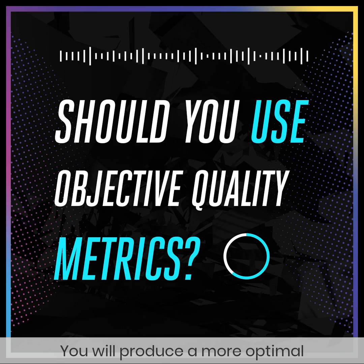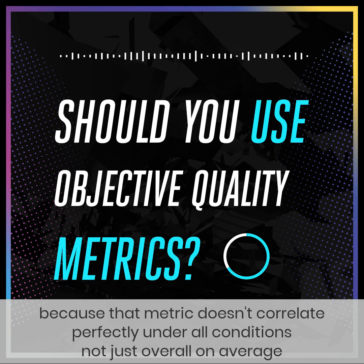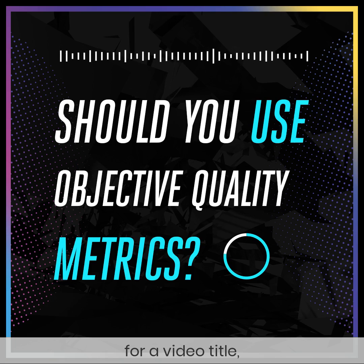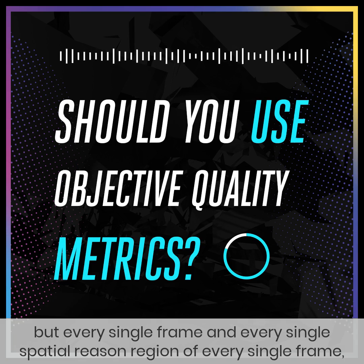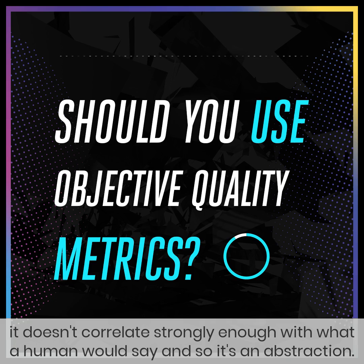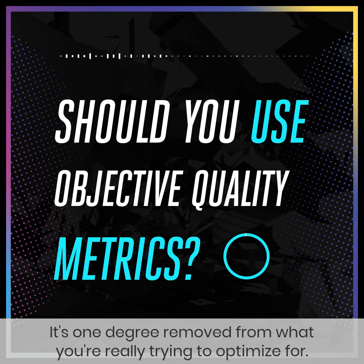And over time, you will produce a more optimal score for that metric. But because that metric doesn't correlate perfectly under all conditions — not just overall on average for a video title, but every single frame and every single spatial region of every single frame — it doesn't correlate strongly enough with what a human would say. And so it's an abstraction, one degree removed from what you're really trying to optimize for.